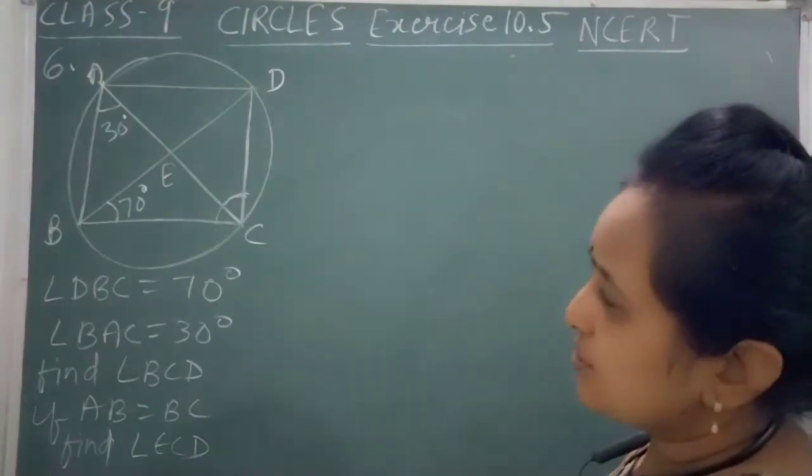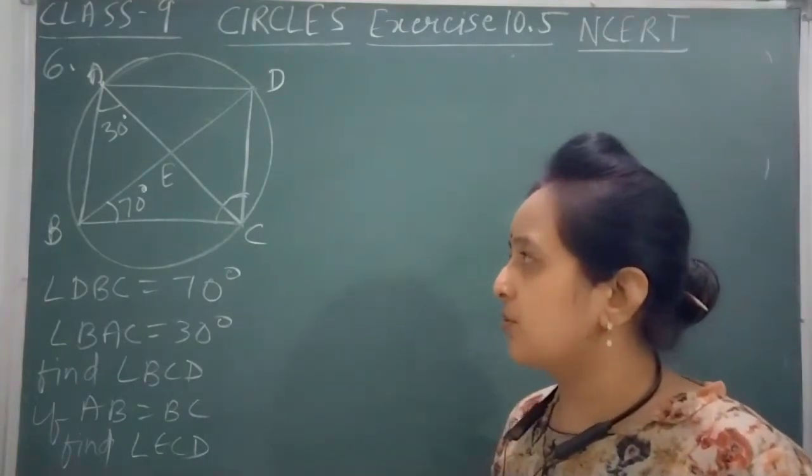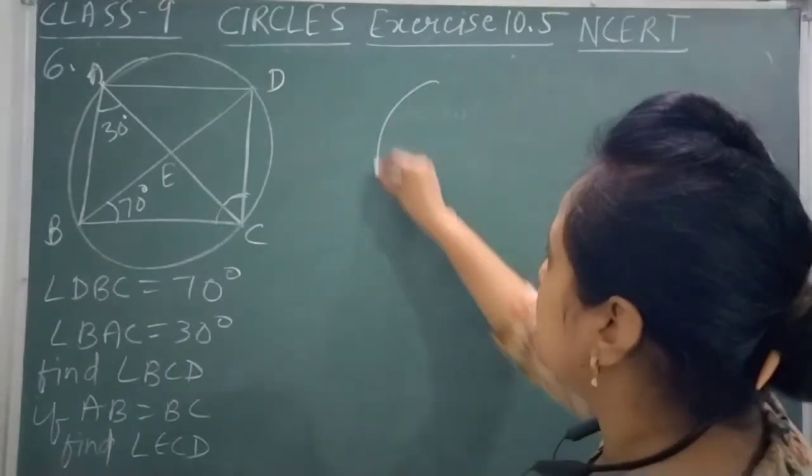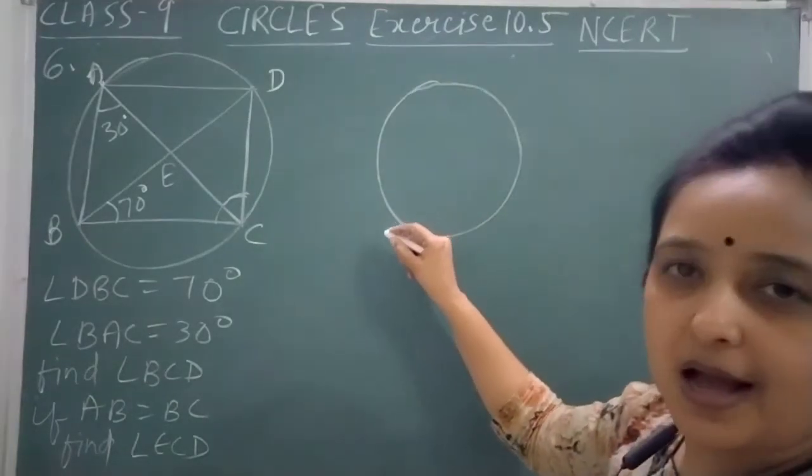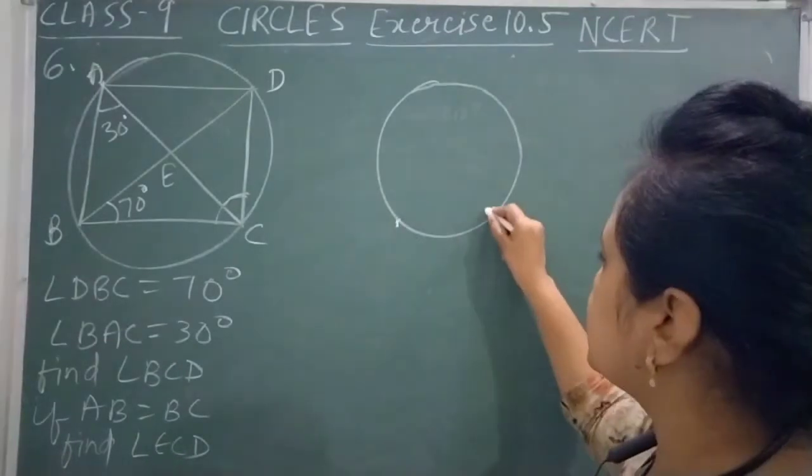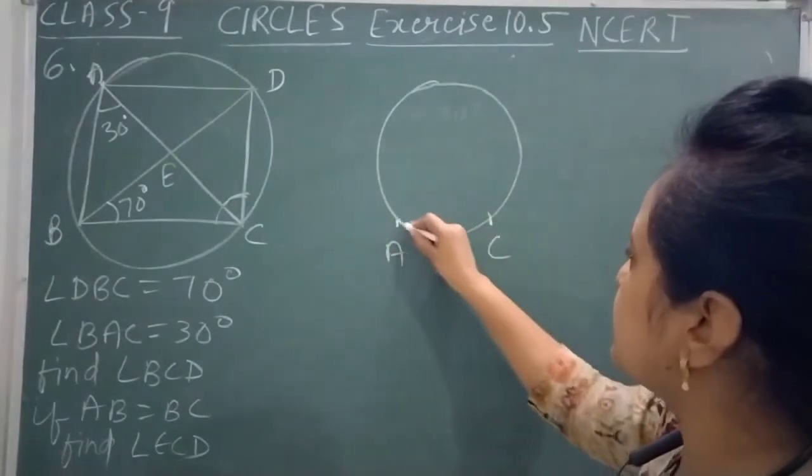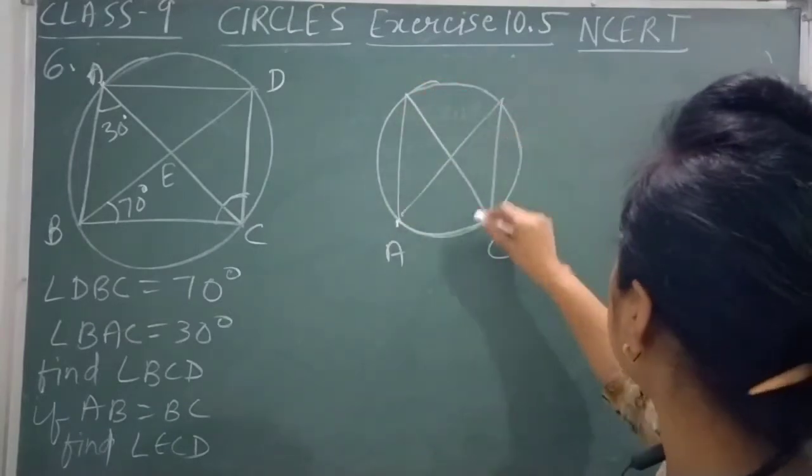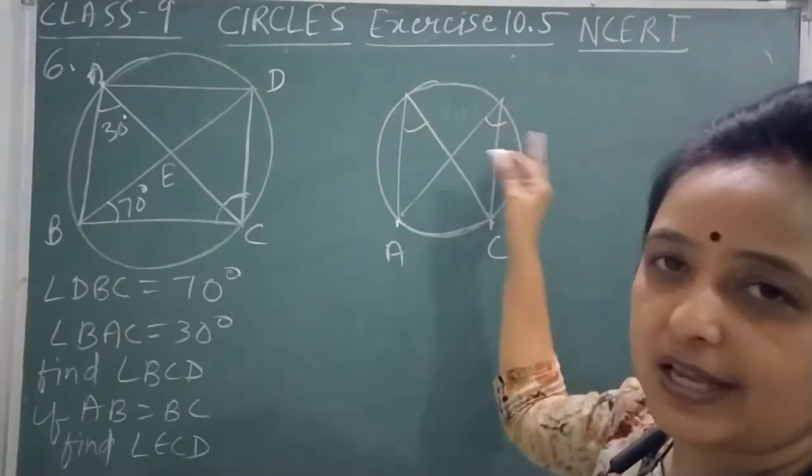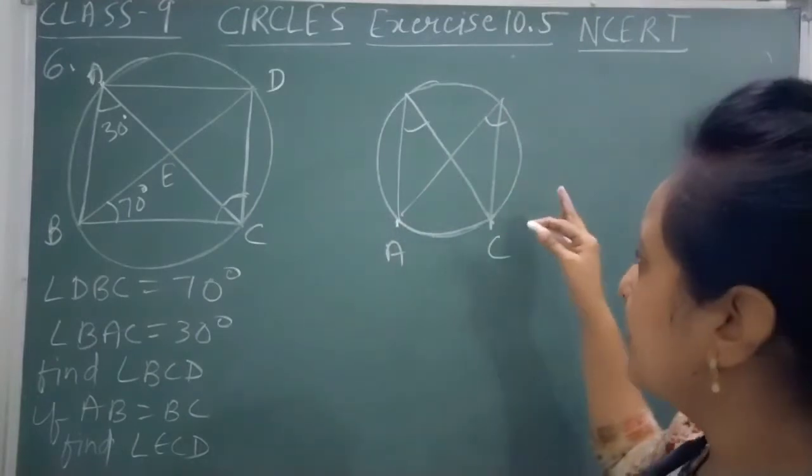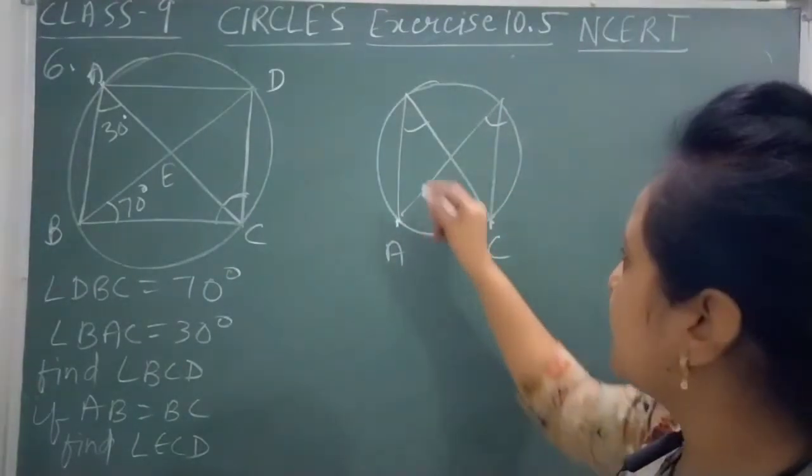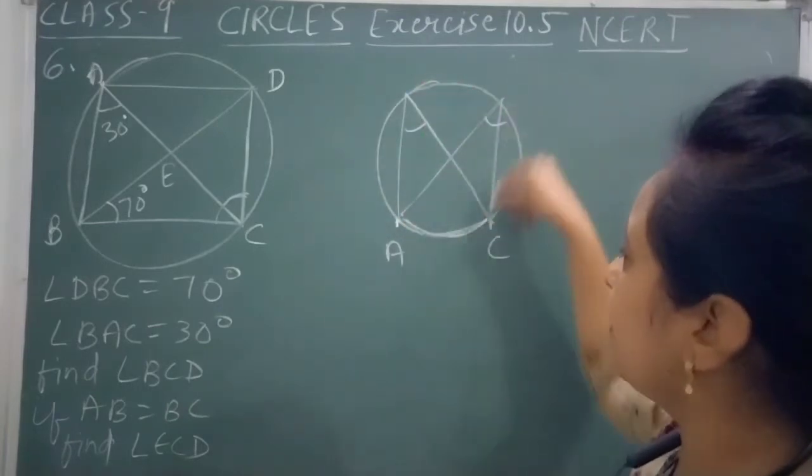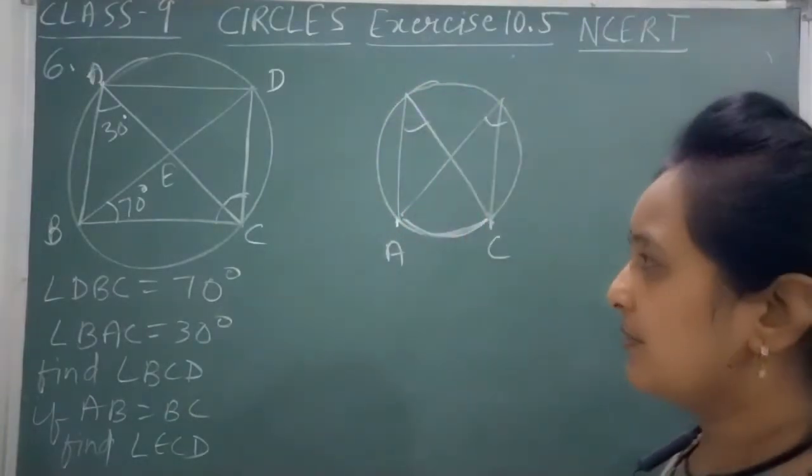In this question, the theorem we will use, I'll explain first. The theorem is that angles made by the same arc are equal. Same arc AC, this arc has two angles. One angle is this and the other angle is this. So these two angles are equal. This theorem you have studied: angles made by the same arc. Same arc AC has these two angles, so both angle values will be equal.